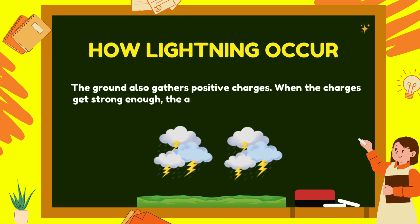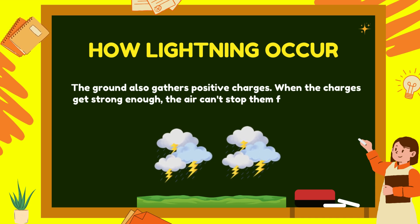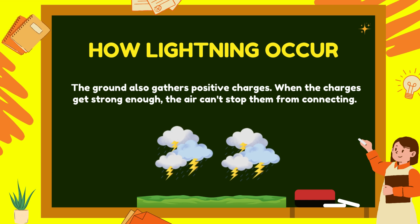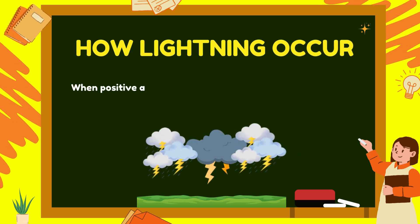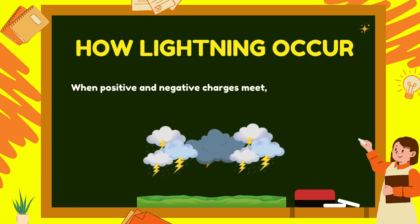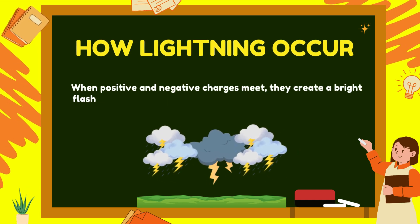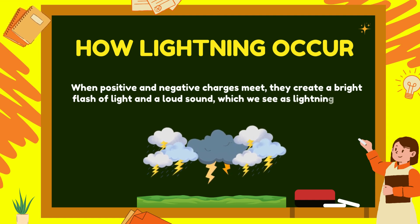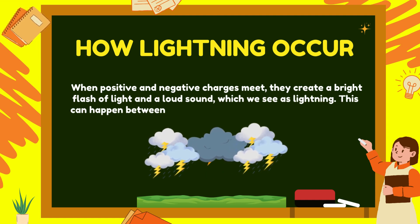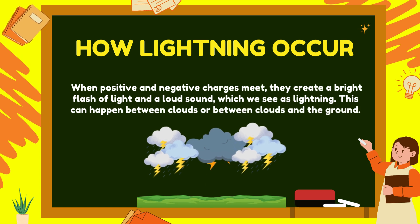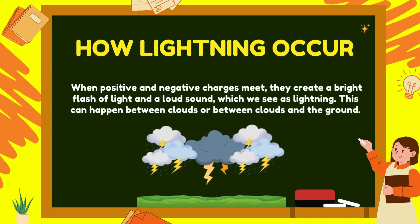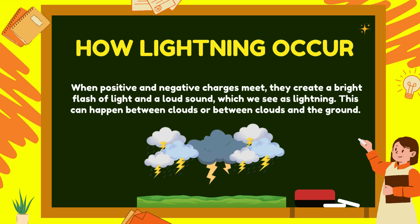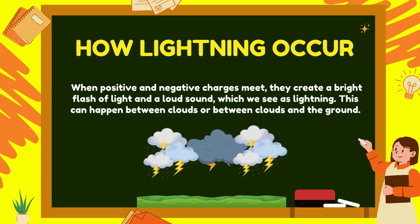When the charges get strong enough, the air can't stop them from connecting. When positive and negative charges meet, they create a bright flash of light and a loud sound, which we see as lightning. This can happen between clouds or between clouds and the ground.